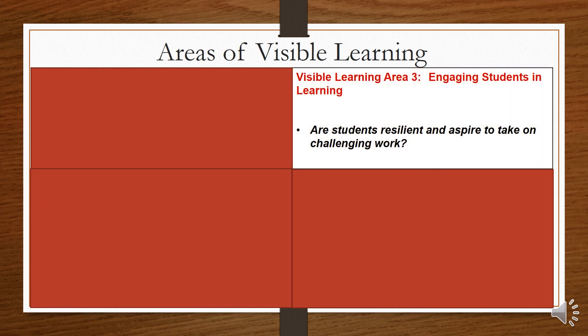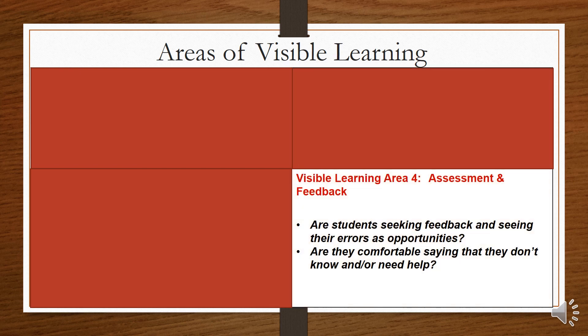The third area is engaging students in learning — are students resilient and do they aspire to take on challenging work? And the fourth area is in assessment and feedback. Are students seeking feedback and seeing their errors as opportunities? Are they comfortable saying that they don't know or that they need help?